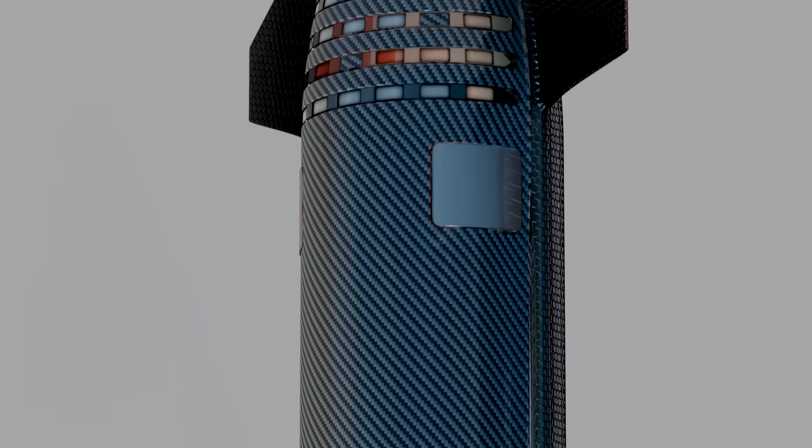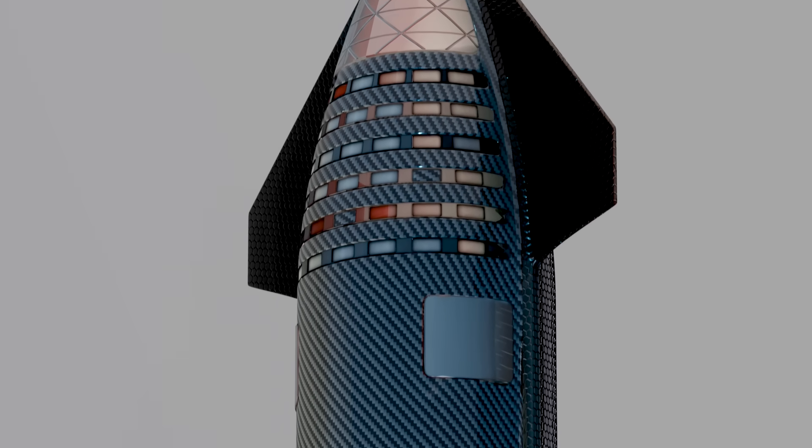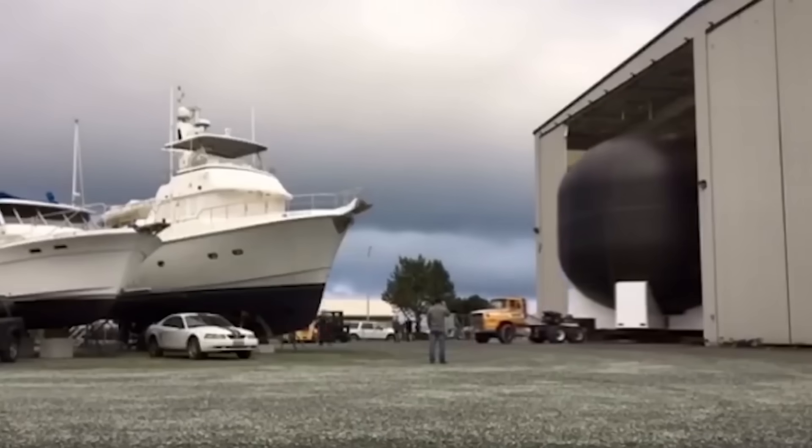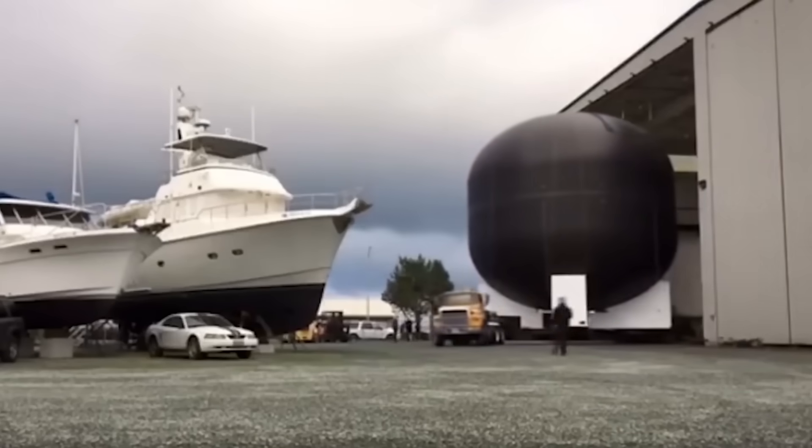But even if SpaceX had gone with carbon fiber, it's hard to see how Starship would have actually been made. In order to manufacture carbon composites, the fibers have to be layered in a very specific way in order for the material to be strong in every direction. Then, the composites need to be cured in an enormous pressure oven.